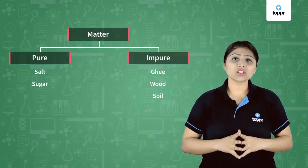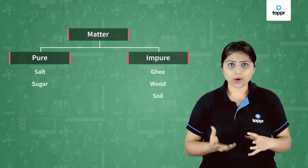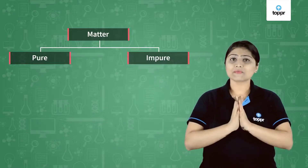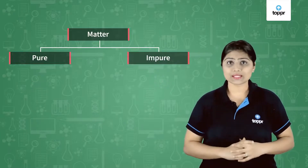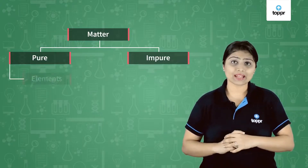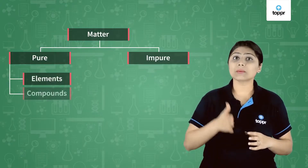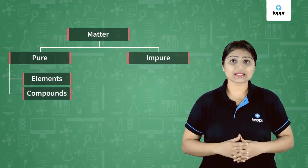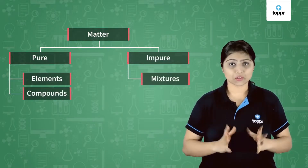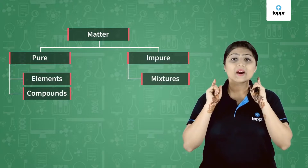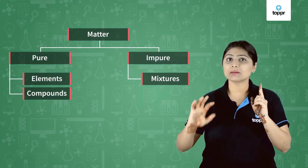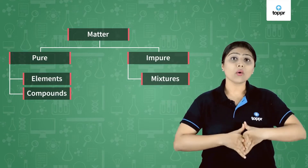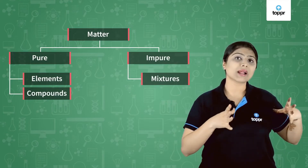Now we've understood which things are said to be pure and which are impure. Pure substances are classified as elements or compounds, and impure substances are all called mixtures. That means all pure substances can either be elements or compounds, and all impure matter is a mixture.